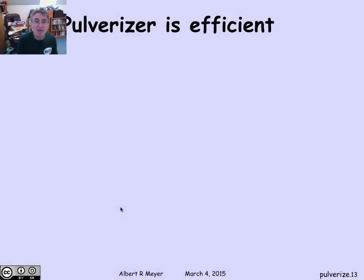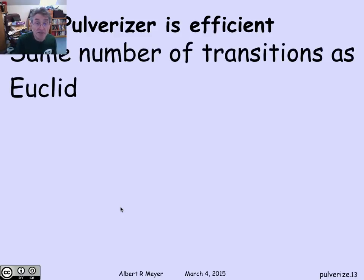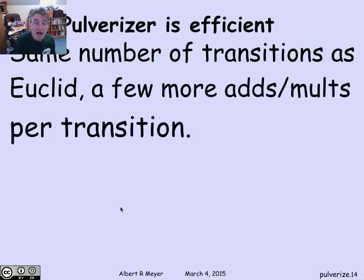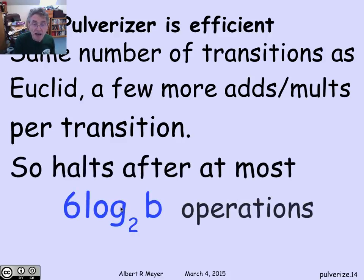Let's finish up the current story. The remark is that the pulverizer is really another very efficient algorithm, exactly the way the Euclidean algorithm is efficient. It's basically got the same number of transitions. So it's taking log to the base 2 b transitions. It's exponentially efficient. Of course, there's a few more additions and multiplications per transition for the extended GCD or the pulverizer than the ordinary Euclidean algorithm. But the main thing is it's a small constant times the log to the base 2 of b. The pulverizer is a very efficient algorithm as well as the Euclidean algorithm.